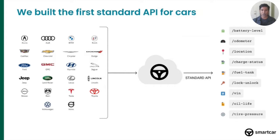Today we built the first standard API for cars. We support 22 different brands in the U.S. and standardized how all those cars communicate into a straightforward RESTful API. Whether you're pulling the odometer or location from any of these brands, it's the same API request and the same data structure coming back. You can even do actions such as locking or unlocking the doors of a car.